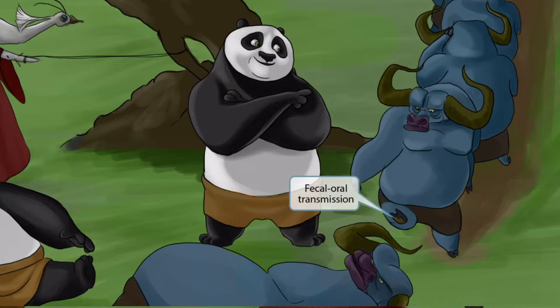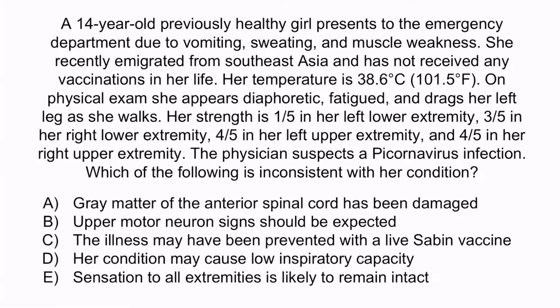Now that we've covered everything in the image, let's do a question to apply this. A 14-year-old previously healthy girl presents to the emergency department due to vomiting, sweating, and muscle weakness. She recently emigrated from Southeast Asia and has not received any vaccinations in her life. Her temperature is 38.6 degrees Celsius, or 101.5 degrees Fahrenheit. On physical exam, she appears diaphoretic, fatigued, and drags her left leg as she walks. Her strength is 1 out of 5 in her left lower extremity, 3 out of 5 in her right lower extremity, 4 out of 5 in her left upper extremity, and 4 out of 5 in her right upper extremity. The physician suspects a picornavirus infection. Which of the following is inconsistent with her condition? A: gray matter of the anterior spinal cord has been damaged. B: upper motor neuron signs should be expected. C: the illness may have been prevented with a live Sabin vaccine. D: her condition may cause low inspiratory capacity. Or E: sensation to all extremities is likely to remain intact.